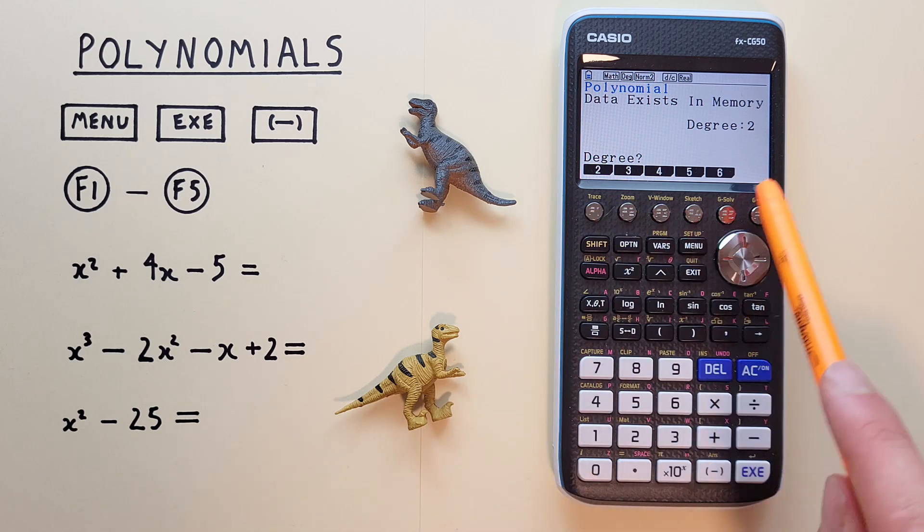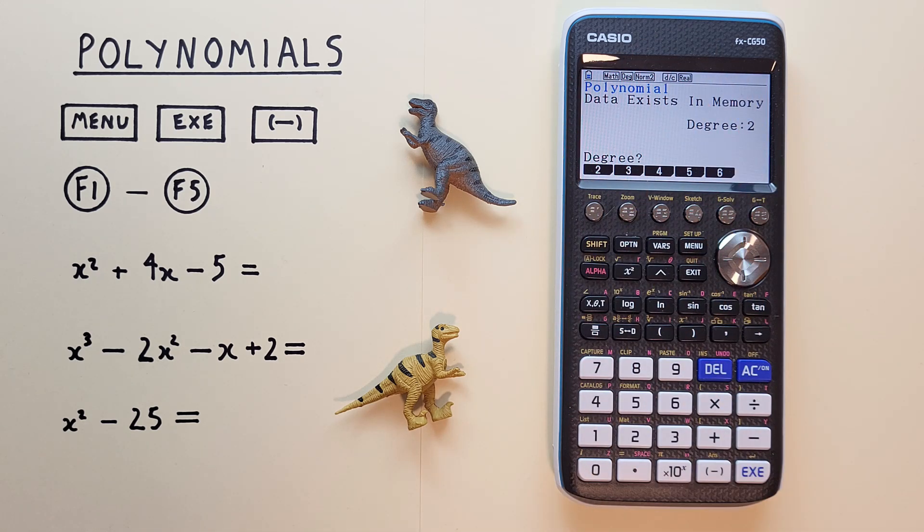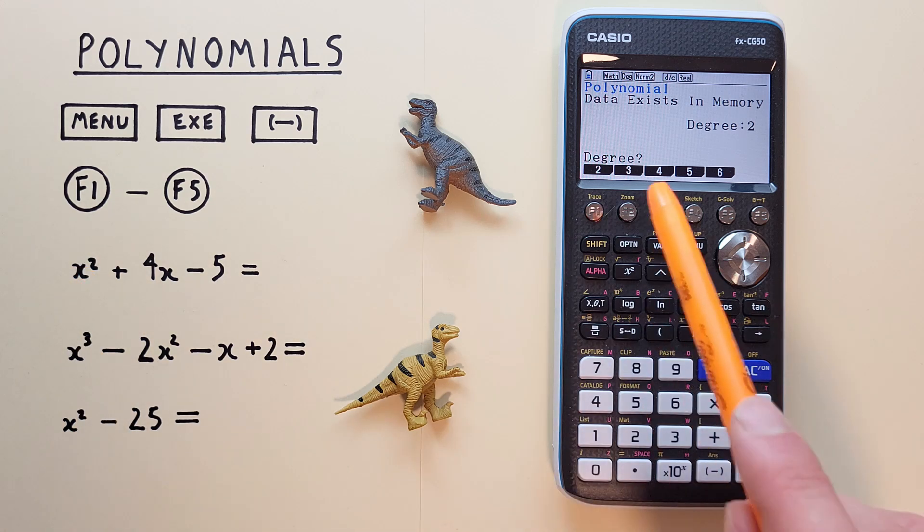Now we're at the polynomial screen here. Let's say we want to solve this: x squared plus 4x minus 5. First we have to determine how many degrees we have. In a polynomial, the degree is determined by the largest power of x. So for this one, x to the power of 2 would be our degree. So we choose a degree of 2.